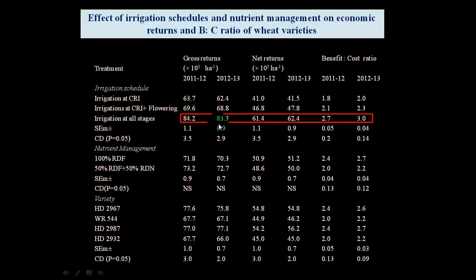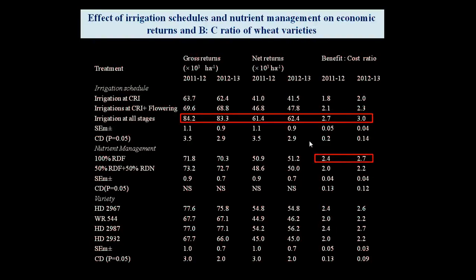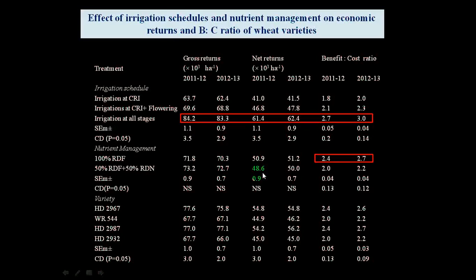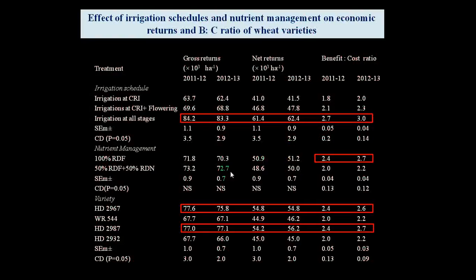The benefit-cost ratio analysis showed that maximum gross return, net return, and BC ratio were found when irrigation was given at all critical stages. Among nutrient management levels, the BC ratio was best when nutrients were applied in inorganic form at 50% RDF and 50% RDN. The combined organic treatment gave high gross returns but labor cost and cost of FYM reduced the net return compared to solely inorganic fertilizer, hence the lower BC ratio.